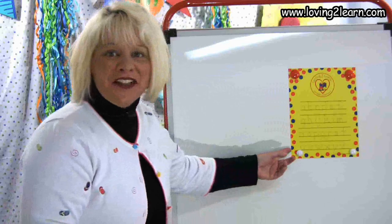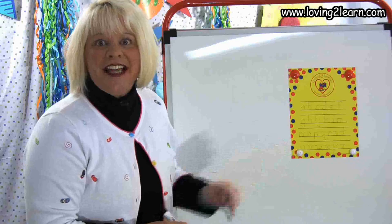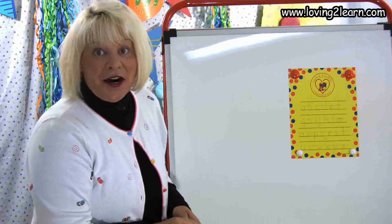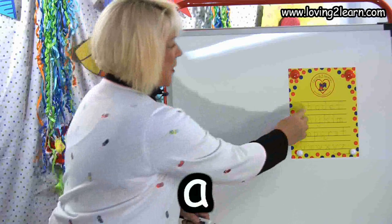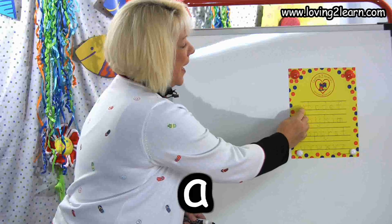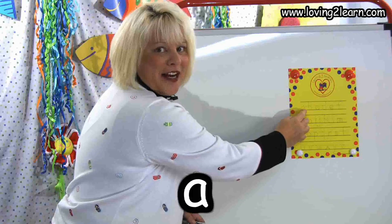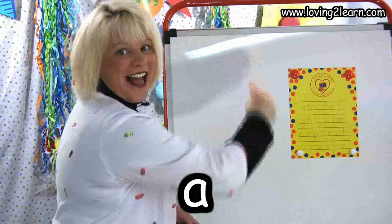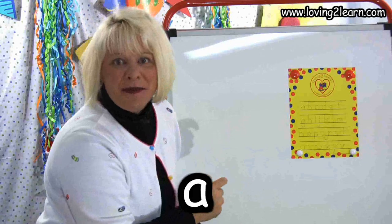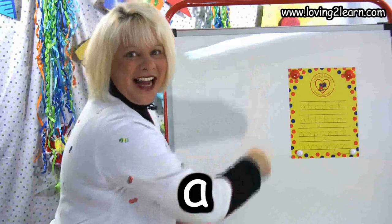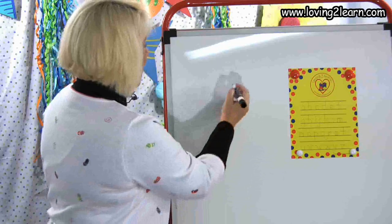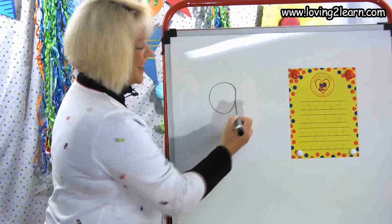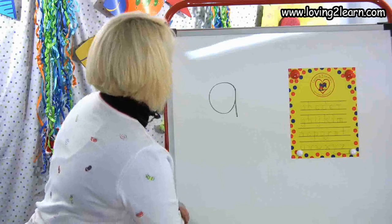On the Loving to Learn website you can print off this sheet and trace the letters over and over again. We're going to start with the letter A. If you look at the letter A, we circle around and a line straight down. Let's do that in the air too — circle around, line straight down. Now let's write it on the board: circle around, line straight down. There you go.